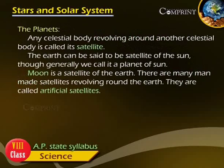Any celestial body revolving around another celestial body is called its satellite. The Earth can be said to be a satellite of the Sun, though generally we call it a planet of the Sun.